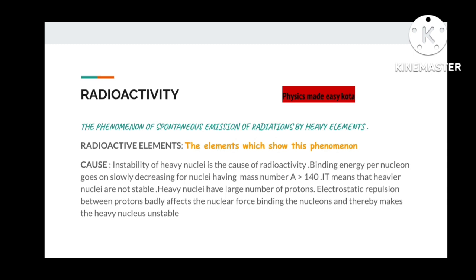Binding energy per nucleon plays a very great role. The binding energy per nucleon for such nuclei, those having mass number greater than 140, keeps on decreasing slowly. It means that the heavier nuclei are not stable so that all nuclei which have mass number greater than 140 are led to be having instability. We can say that heavy nuclei have large number of protons and the electrostatic repulsion between protons badly affects the nuclear forces.